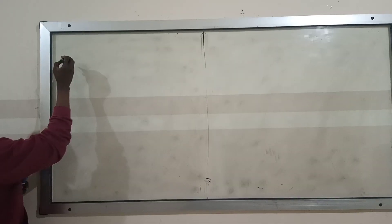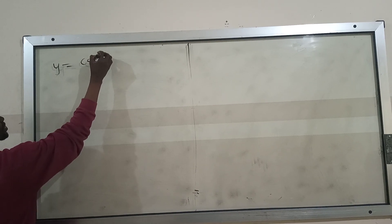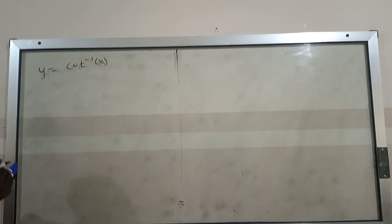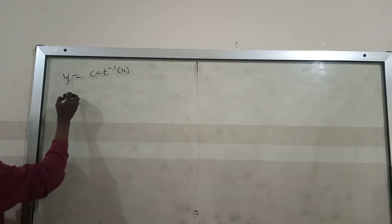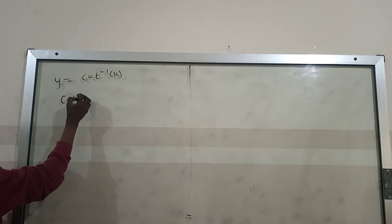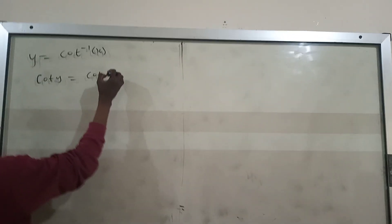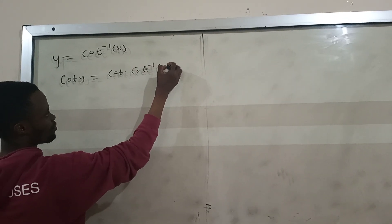So here, we are going to find the derivative of y equal to cot inverse of x. Cot inverse of x is simple. Just multiply both sides by cot. So we are going to get cot(y) equal to cot times cot inverse of x, which gives us cot(y) equal to x.